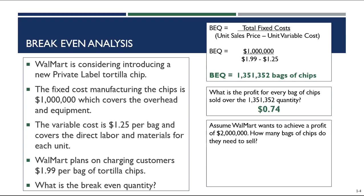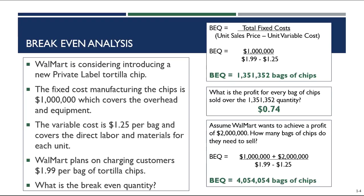Let's assume that Walmart wants to achieve a profit of $2,000,000. Adding the profit goal to the fixed cost: $3,000,000 divided by $0.74 — Walmart now needs to sell 4,054,054 bags of chips to achieve a $2,000,000 profit. Is that possible? There are over 3,400 Walmart supercenters in the United States, which means each store needs to sell 1,200 bags of tortilla chips per year — only about 99 bags per month per store. So yes, it is absolutely possible. Given this breakeven analysis, a Walmart executive should probably go ahead and introduce this new private label tortilla chip.